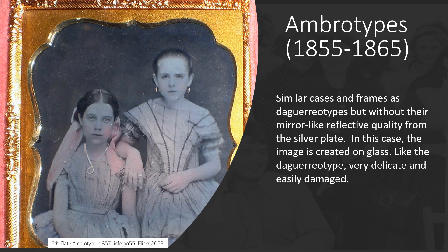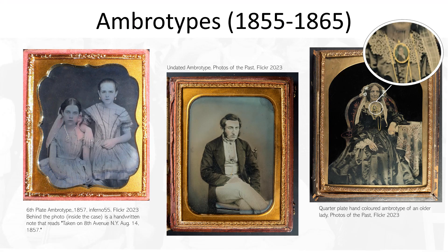Today, ambrotypes are very highly sought after by historians and genealogists because of their unique and beautiful appearance. Here are some examples: as you can see, at first glance they look very similar to daguerreotypes — similar types of subjects, similar types of frames — but the medium being glass is very different. A historian looking at the frames and studio markings may actually be able to date both types of photographs by the type of frame used.